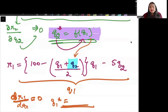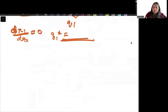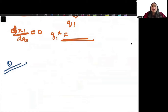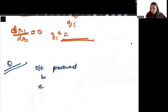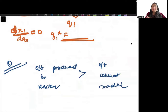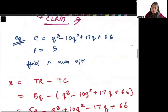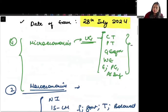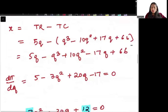This kind of question can be asked in the exam. You can also be asked to compare the output produced in the Bertrand model versus the Cournot model — which is greater. I also forgot to mention: in microeconomics, there will be questions on game theory.